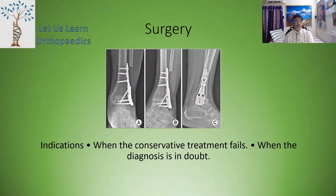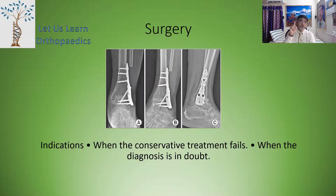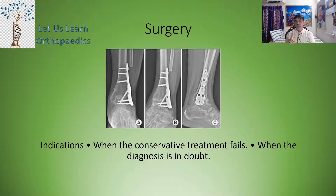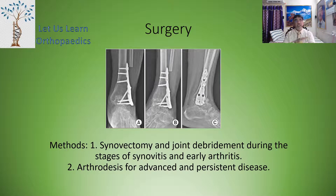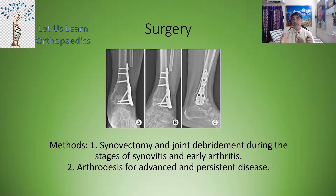The indications for surgery in ankle tuberculosis are: when conservative treatment fails, and when the diagnosis is in doubt. The surgical methods are two: first, synovectomy and joint debridement during the stage of synovitis and early arthritis; and second, arthrodesis for advanced and persistent disease.